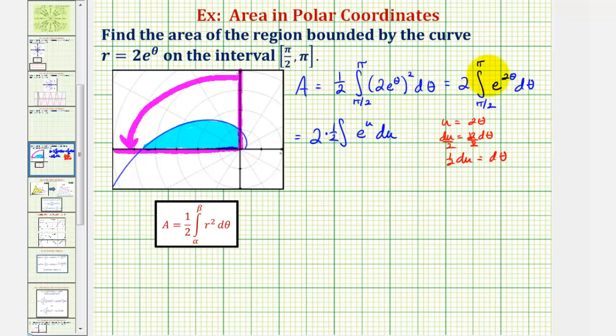These limits of integration are in terms of theta. We need to write them in terms of u. If theta is pi over two and u equals two times theta, u would be two times pi over two, or just pi. And when theta is pi, u is two pi.